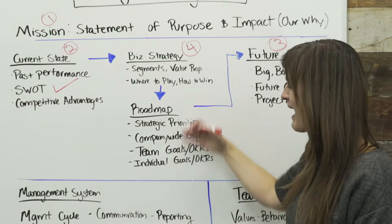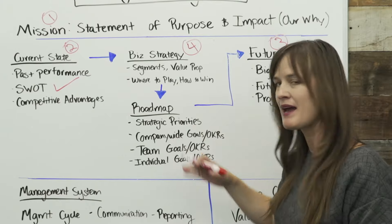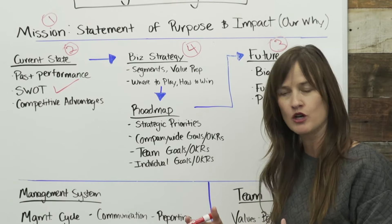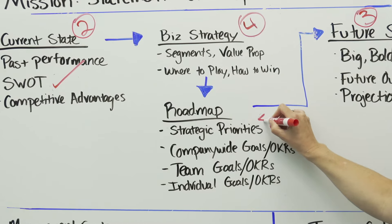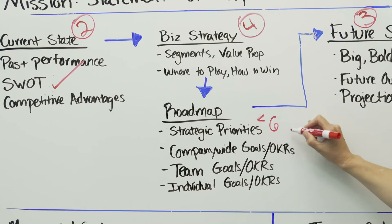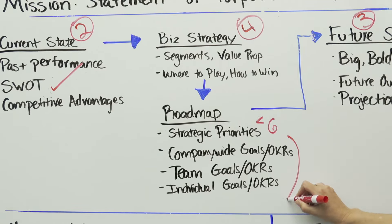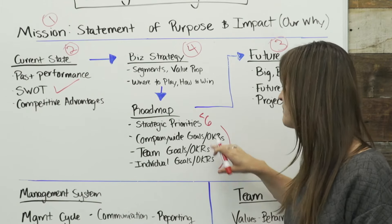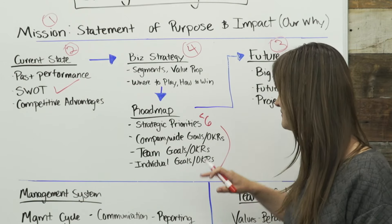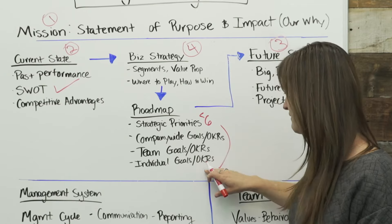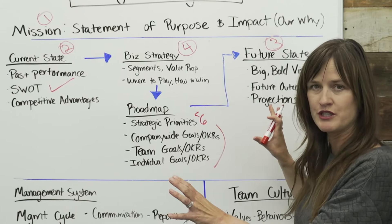Which then has legs — has execution in strategic priorities. By that I mean three-year long-term strategic priorities; normally there's about six of those or less. Which moves into your annual plan of company-wide goals and key performance indicators, or you might be using OKRs — objectives and key results — team goals and individual goals. This really is the annual expression of your whole strategic plan.